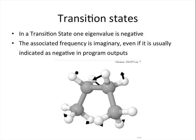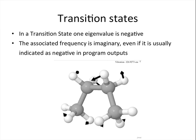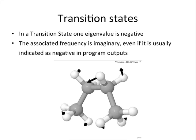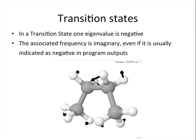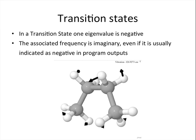For transition states, we know now that we have one negative eigenvalue. The associated frequency is then imaginary, even if usually in a program output it is indicated as simply a negative value.